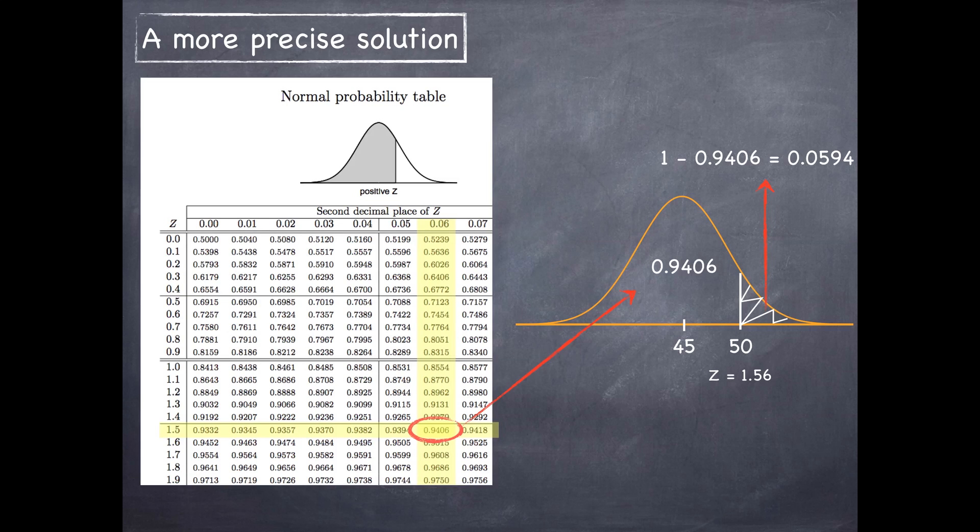There are two ways we can interpret this. 5.94% of passengers incur an excess baggage fee, which is what the question was asking us. Or if I randomly select an airline passenger, the probability that this passenger will incur an excess baggage fee is 0.0594. So we can basically interpret these as probabilities or percentages.